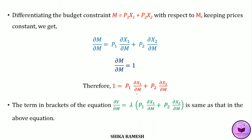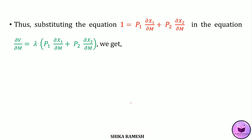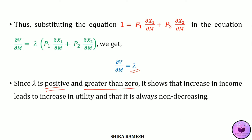The term in brackets in the equation ∂v/∂m = lambda · [bracket] is the same as in the differentiated budget constraint. Substituting, we get ∂v/∂m = lambda. Since lambda is a positive value greater than 0, this shows that an increase in income leads to an increase in utility, and utility will always be non-decreasing. Whenever income increases, the consumer's utility will always increase — it will never decrease.